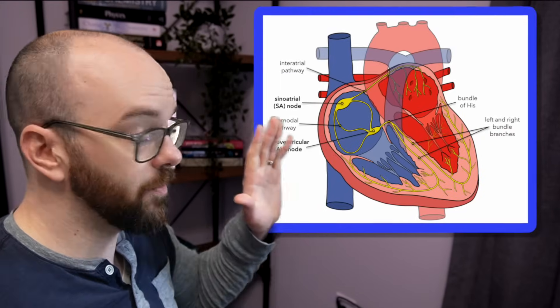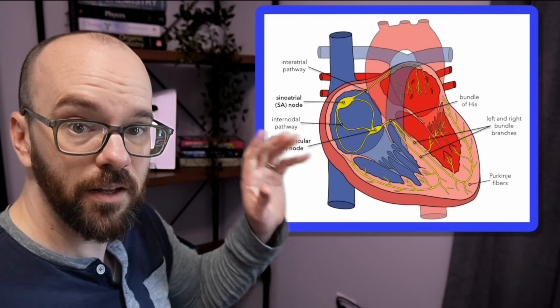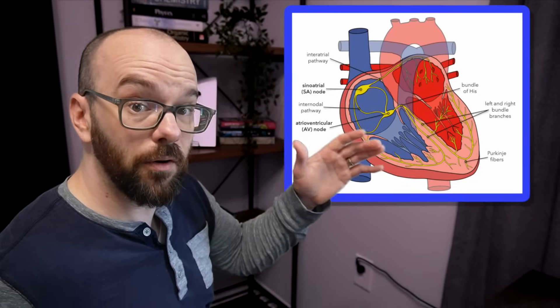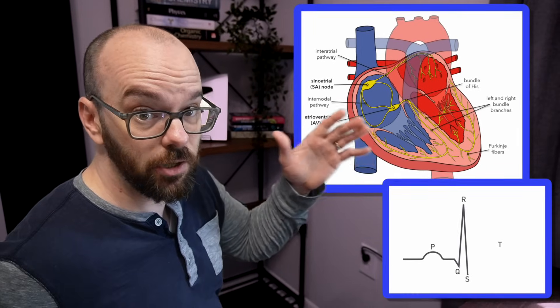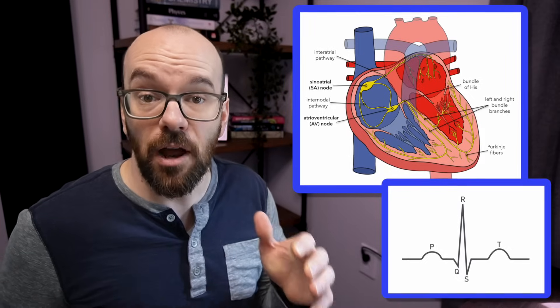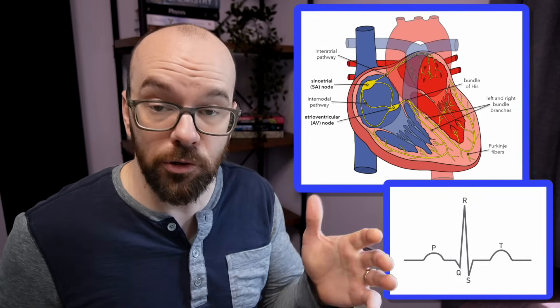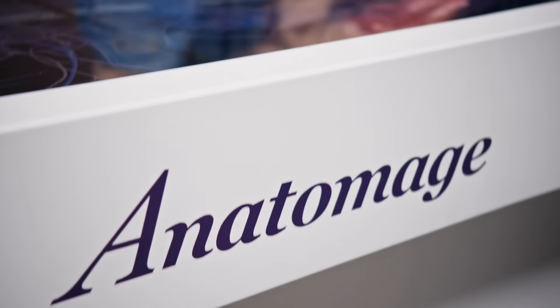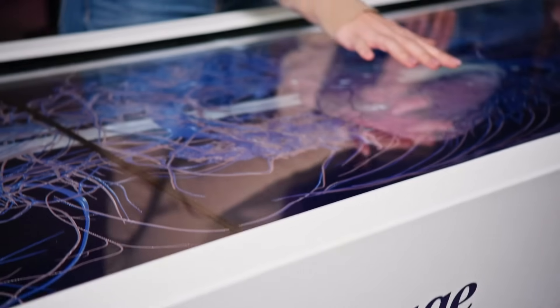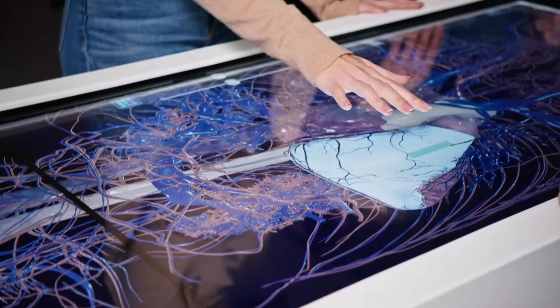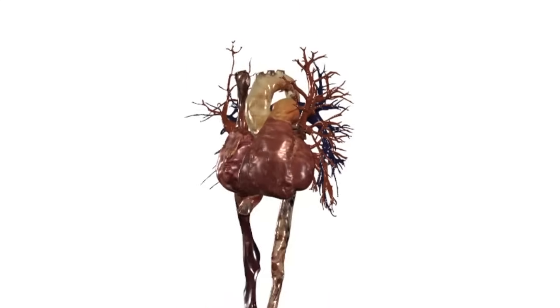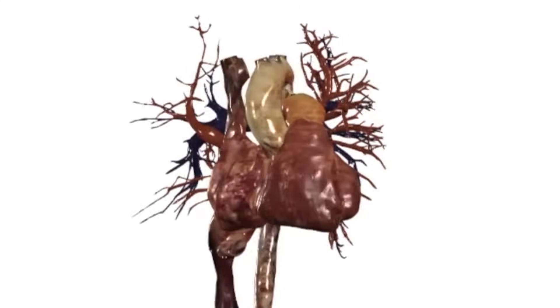In this video we're going to build out the cardiac conduction system piece by piece, learn how it all works, and then use that to understand the different parts of an ECG or EKG. Throughout the video we'll look at real human cadavers and other cadaveric images provided by Anatomage, the creator of the world's first virtual dissection table, so you can see all these structures arranged three-dimensionally in the body.